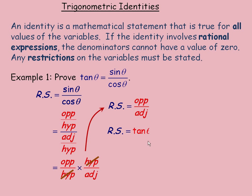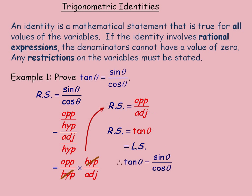The right side has simplified to tan θ, and tan θ is what was on the other side, so we have succeeded in showing that sin θ over cos θ is equal to tan θ. We say that this is the same as what was on the left side, so the proof is complete. Tan θ equals sin θ over cos θ, and tan θ equals tan θ.